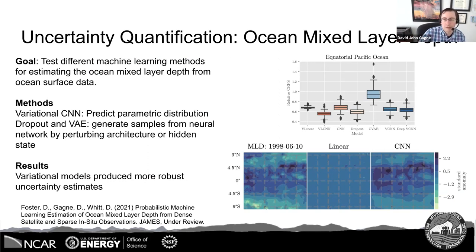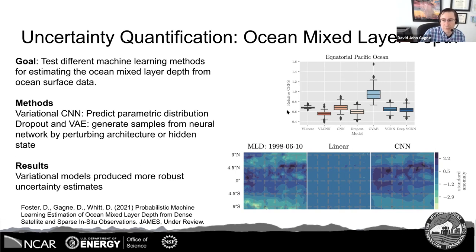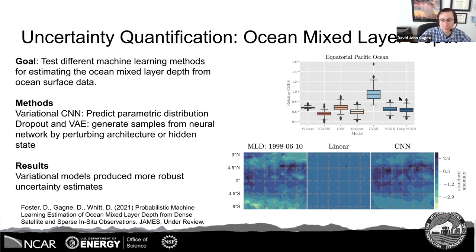Another example from our group: we were interested in different ways of quantifying uncertainty with neural networks, in a problem estimating ocean mixed layer depth from surface satellite and model fields. We compared a bunch of different uncertainty quantification methods and found that the better ones are those that assume a certain distribution — like a Gaussian — for the predictions and predict the properties of that distribution. This seemed to work better than sampling methods, which are more flexible but tend to be under-dispersive. We found that while not a perfect recreation, the convolutional neural network does recreate the broader scale patterns and the anomaly field quite well.